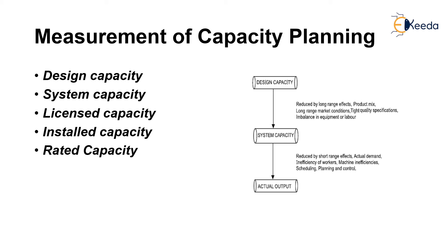For example, if we have a long-term plan for establishing a thermal power plant, whenever we establish it we consider the design capacity, system capacity, licensed capacity, installed capacity, and rated capacity. Before starting the thermal power plant, we plan how to operate it with particular installations, rated capacity, system capacity, and licensed capacity. Based upon the design system, the actual output is produced through capacity planning. If capacity planning is properly done, the output of the products is also properly achieved, meeting the demands of the customers.